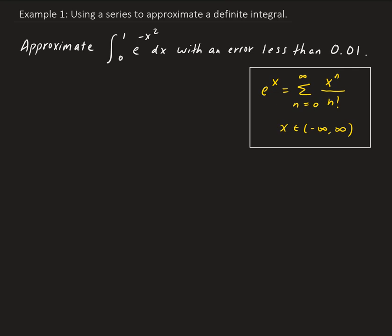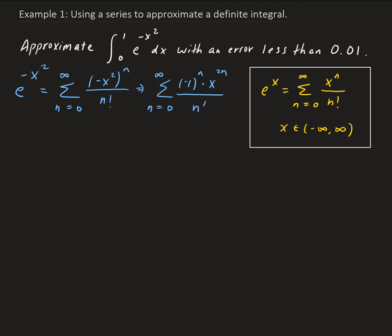Using the power series for e to the x, we need to find the series for e to the minus x squared. We're going to replace x with minus x squared, so that's going to give us minus x squared to the n, all divided by n factorial. We can rewrite this as minus 1 to the n times x to the 2n, all divided by n factorial — pulling out the minus 1 to the n, and then we have x to the 2n.